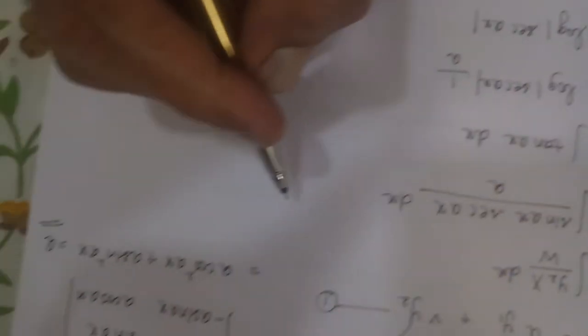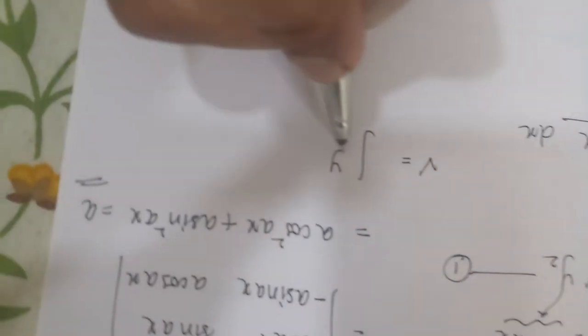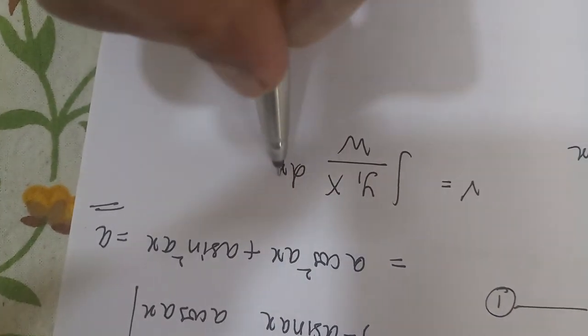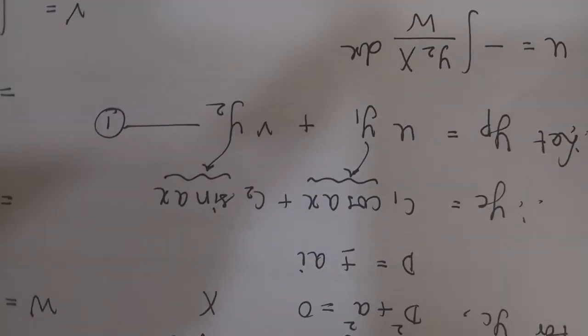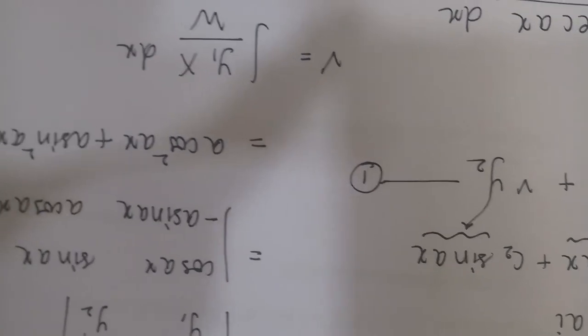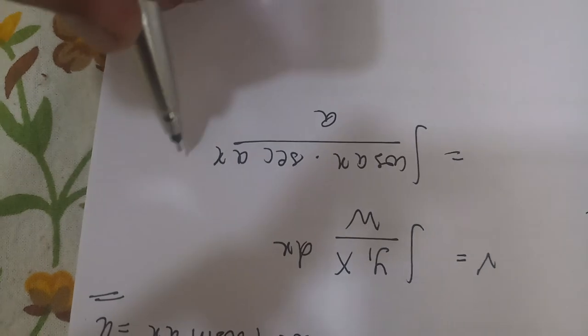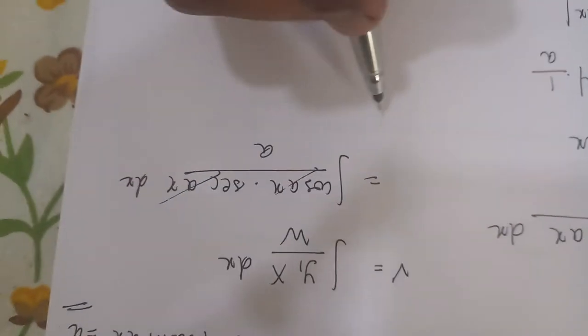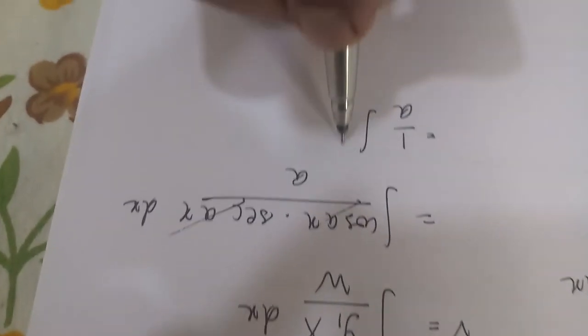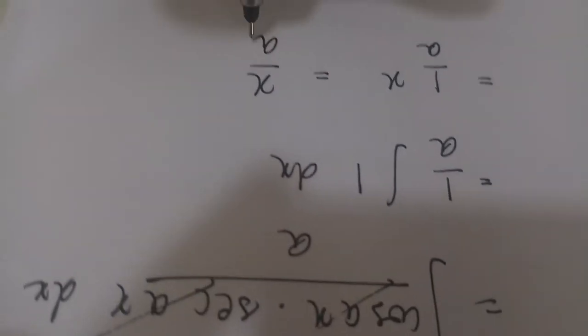Let us now see how to find v. v is given by the formula integration of y1 X upon W dx. y1 according to the question that we had assumed, y1 is nothing but cos ax. Capital X is nothing but sec ax upon W is nothing but a. I think cos ax and sec ax will cancel out with each other. You will get 1 upon a integration of 1 dx, that means 1 upon a into x, which is nothing but x upon a.